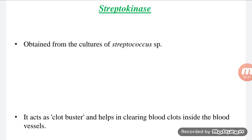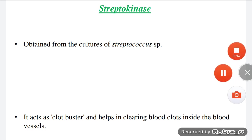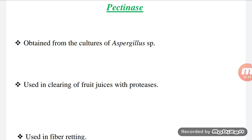Streptokinase is obtained from cultures of Streptococcus species and it prevents blood clotting in the blood vessels. Another enzyme is pectinase, which is obtained from cultures of Aspergillus species and is used in the clearing of fruit juices, along with proteases.